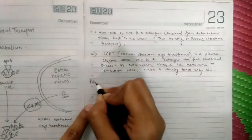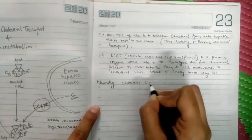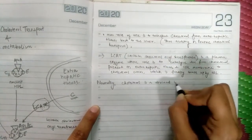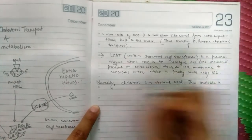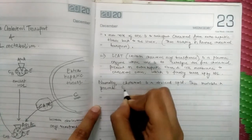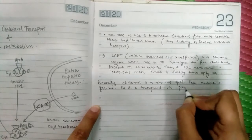Now normally, cholesterol as we know is a derived lipid, thus insoluble in plasma, so it is transported via plasma lipoproteins in two forms.